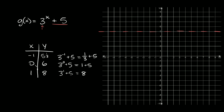Then we're going to have three raised to the first power plus five, so here we get eight. So we've got three points: negative one gives five and one third, zero gives six, and one gives eight. Plotting those — negative one, 5.3 is right there; zero, six is right there; and one, eight. Connecting the dots, you'll see we have a graph that gets really close to the asymptote but never actually touches it, then blasts off into infinity in that direction.